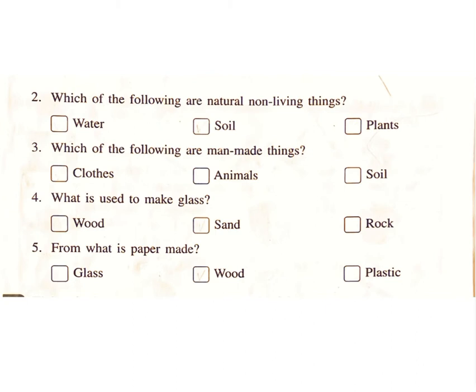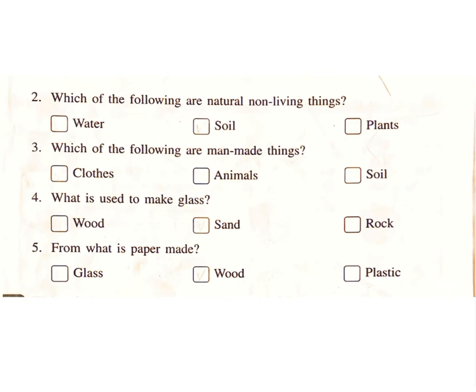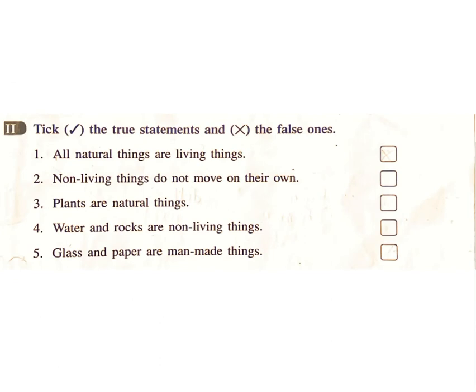3. Which of the following are man-made things? Clothes, animals, soil. Answer: clothes. 4. What is used to make glass? Wood, sand, rock. Answer: sand. 5. From what is paper made? Glass, wood, plastic. Answer: wood.